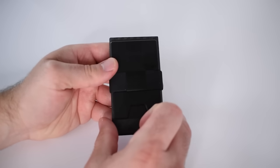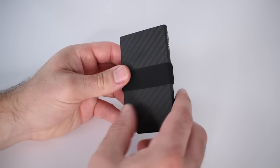Both the Parliament wallet and cardholder are smaller than a conventional wallet, hold 12 cards plus cash, block RFID skimming, and have this nifty release to access your cards.